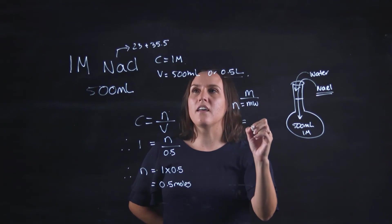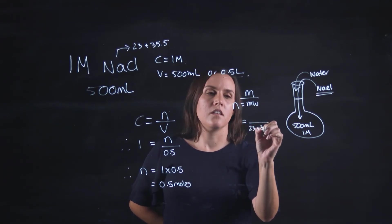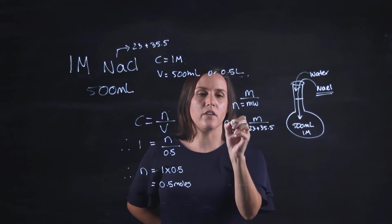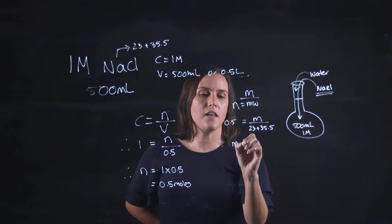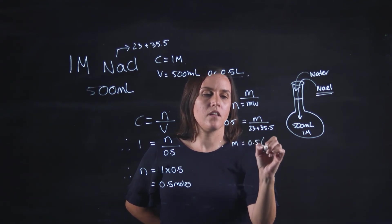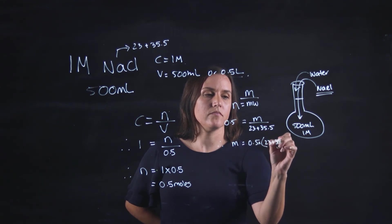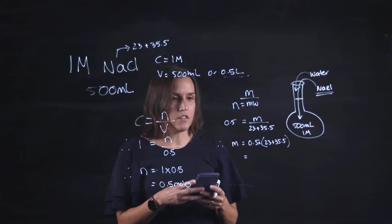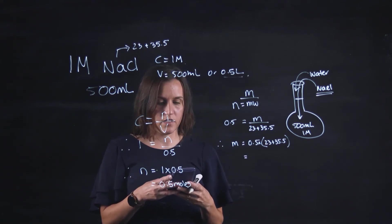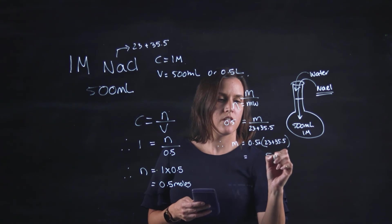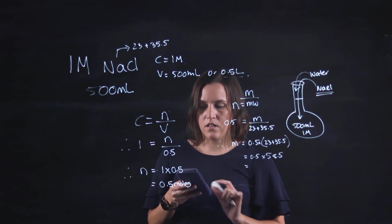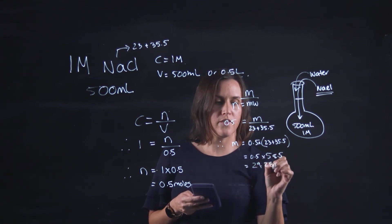So adding these values together, the mass is what I'm trying to find out and my number of moles is 0.5. So therefore rearranging for m, so 23 plus 35.5 gives me 58.5 times a half, so it's 29.25 grams.